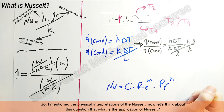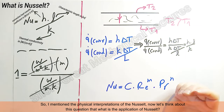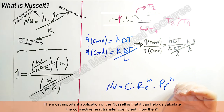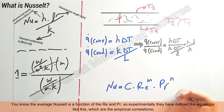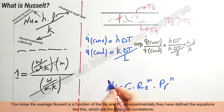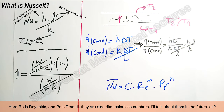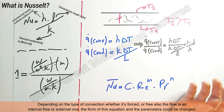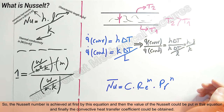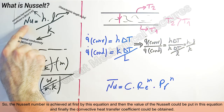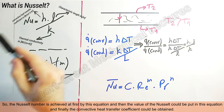Now let's think about the application of Nusselt. The most important application is that it helps us calculate the convective heat transfer coefficient. The average Nusselt is a function of Reynolds and Prandtl numbers. Experimentally, empirical correlations of the form Nu = C · Re^m · Pr^n have been defined. Depending on whether the convection is forced or free, and whether the flow is internal or external, the form of this equation changes. The Nusselt number is first obtained from this empirical equation, and then its value is used to calculate the convective heat transfer coefficient.